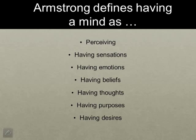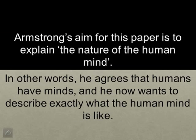In the first paragraph, he sets out a number of things he defines as having a mind, including perceiving, having sensations, emotions, beliefs, thoughts, purposes, and desires. These are all things that we all agree that humans do, and just in our day-to-day speech we refer to those things as having a mind.